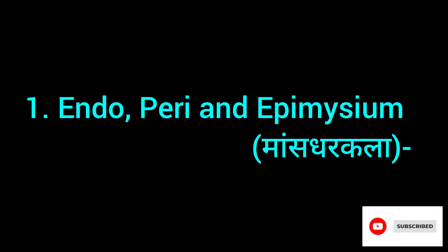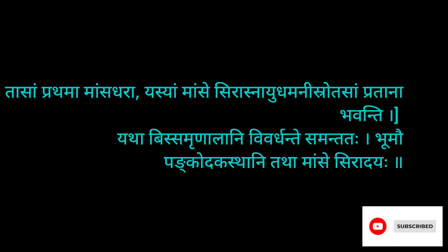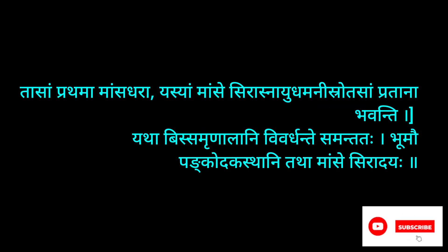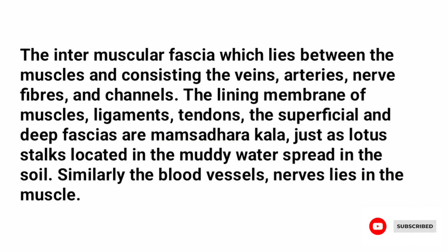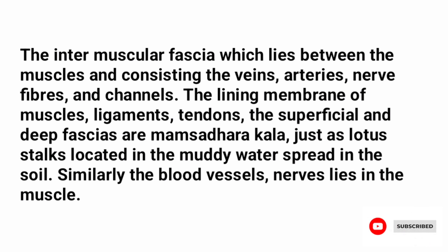First, Maas dharkala is correlated to endo-, peri-, and epimysium. Tasa prathama maasdra: Yasya maashe sirasnayudhamni srotsa prathana bhavanti, bishmarnalani vivardhanate samtata. Bhuma pankotkastani tatha maashe siradaya. The intermuscular fascia lying between the muscles consists of veins, arteries, nerve fibers, and channels. The lining membrane of muscles, ligaments, tendons, and the superficial and deep fasciae are mansadharakala — just as lotus stalks in muddy water spread through the soil, similarly, blood vessels and nerves lie within the muscle.